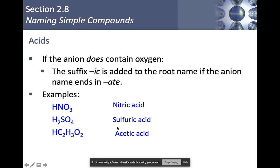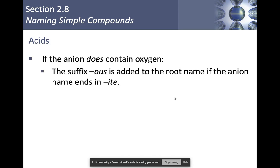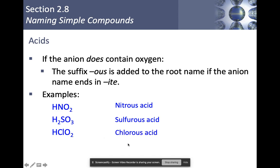If the anion does contain oxygen, but it ends in '-ite', we drop the ending '-ite', and it becomes '-ous' acid. For example, we have HNO2. NO2, that is nitrite. So this becomes nitrous acid. H2SO3, that is sulfite. So from sulfite, it becomes sulfurous acid. And then last but not least here, we have ClO2. That is chlorite, and so it becomes chlorous acid.